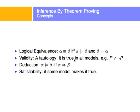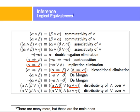A tautology models, for example, P OR NOT P — this is always true. There's no value for P that will make this false. Alpha entails beta if it's true. The concept of satisfiability is that if you have an expression in which at least one model makes it true, then that expression is satisfiable. But let's focus on utilizing these rules now.